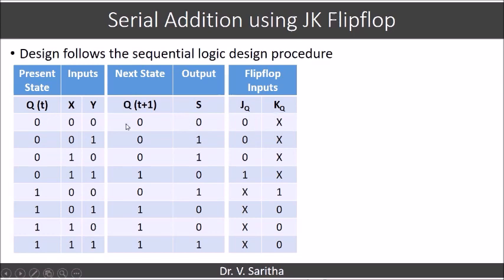So if you say 0, 0 here, we will get JQ as, we will get JK as 0X. Again, 0, 0, 0X. 0, 0, 0X. 0, 1, 1X. 1, 0, X1. 1, 1, X0. Similarly, for the last two also, 1, 1, X0.